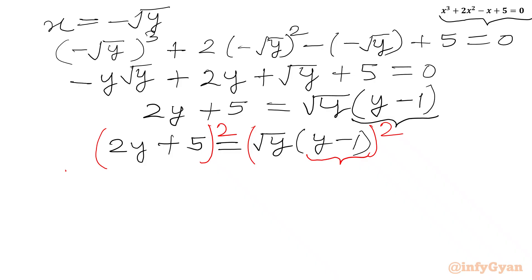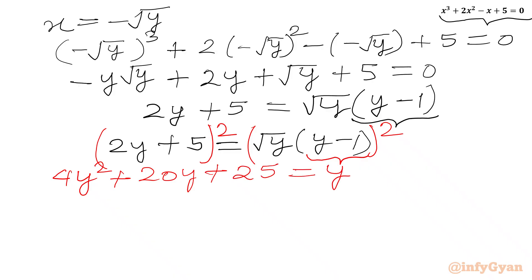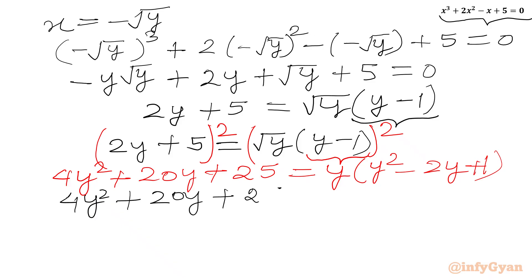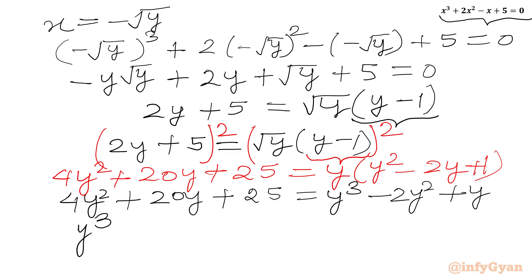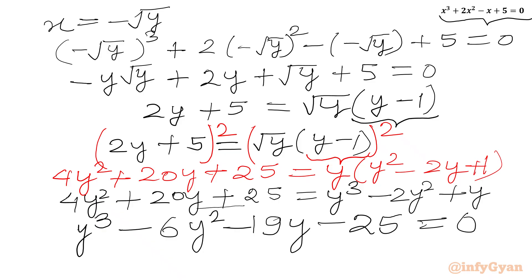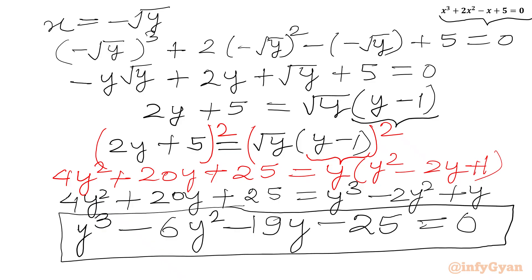Now squaring both sides and applying the (a+b)² formula: 4y² plus 20y plus 25 equals y times (y² minus 2y plus 1). Simplifying: 4y² plus 20y plus 25 equals y³ minus 2y² plus y. Taking all terms to the RHS: y³ minus 6y² minus 19y minus 25 equals 0. This is our answer — the cubic equation whose roots are the squares of the roots of the original equation.